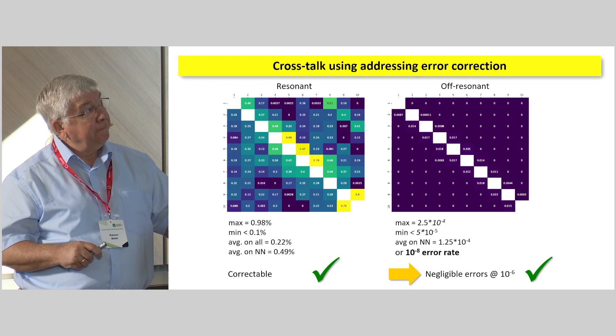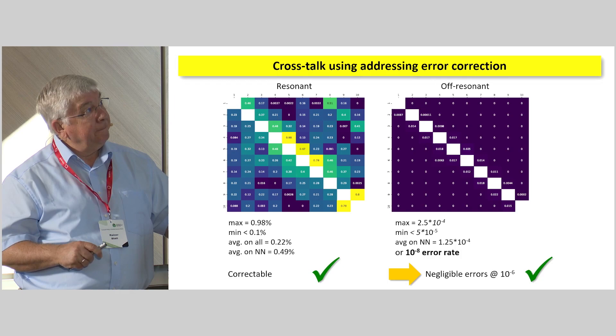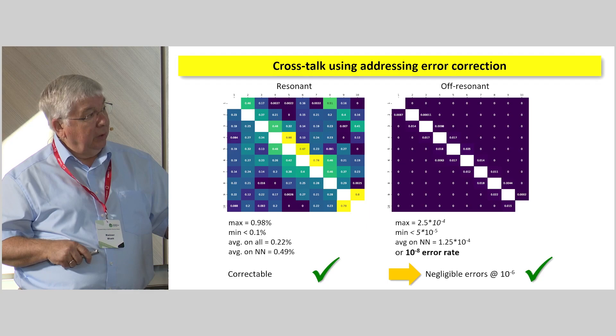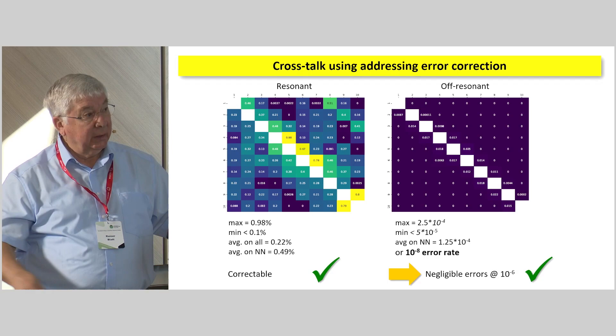Just to tune a little bit in. This is what we get in detail when we just go into the matrix. And this is, as we say, correctable, because this is a coherent error, because we can correct for that. And in fact, what we're using, we're using what we call addressing error correction.